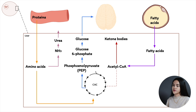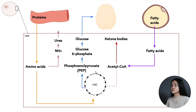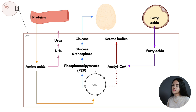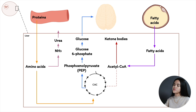Ketone body levels will increase, and if they exceed the kidneys' capacity to reabsorb them, they end up in urine. Within about two days of fasting, glucose levels drop and ketone bodies significantly rise as the body's alternate energy source. Fatty acids are mobilized but cannot cross the blood-brain barrier and cannot be used by the brain for energy.